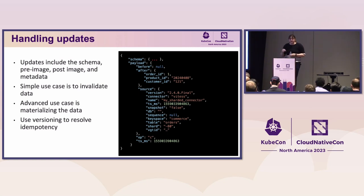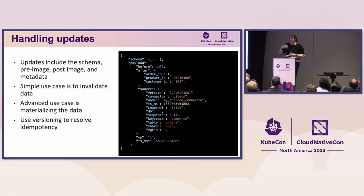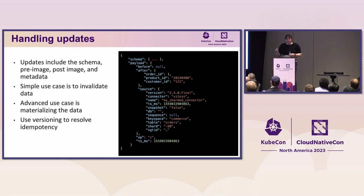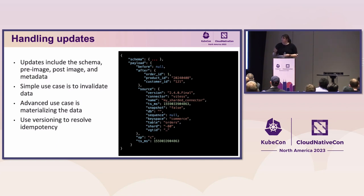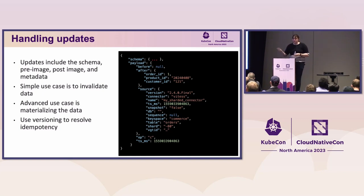Debezium listens to updates and produces update records. The core pieces are a schema — telling you what the schema looks like on every update — and a pre-image and post-image. For a create record, there's no before-image, but there's an after-image showing what the database looks like after the update. Importantly, we have transaction IDs so we know where we are in the stream and whether we've already applied a given update to the cache. For sharded databases like Vitess, we also get shard IDs so we can fan out and use multiple Debezium processes to read data. This is also a great tool for invalidations — instead of updating the write path, you can listen to the database, see when your data is no longer relevant, kick it out, and then lazy-load it back.